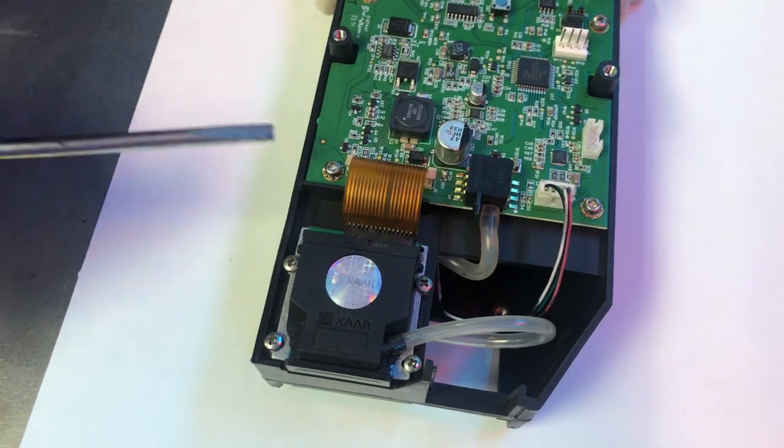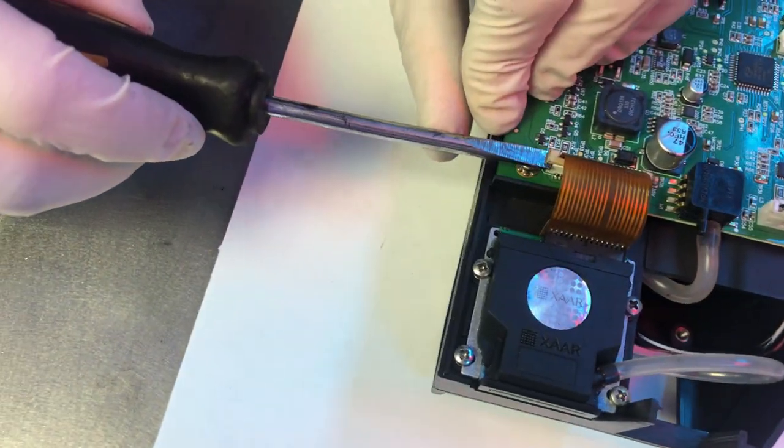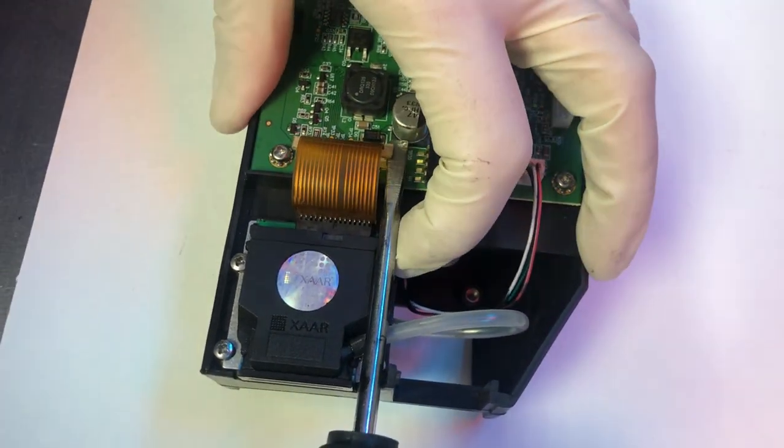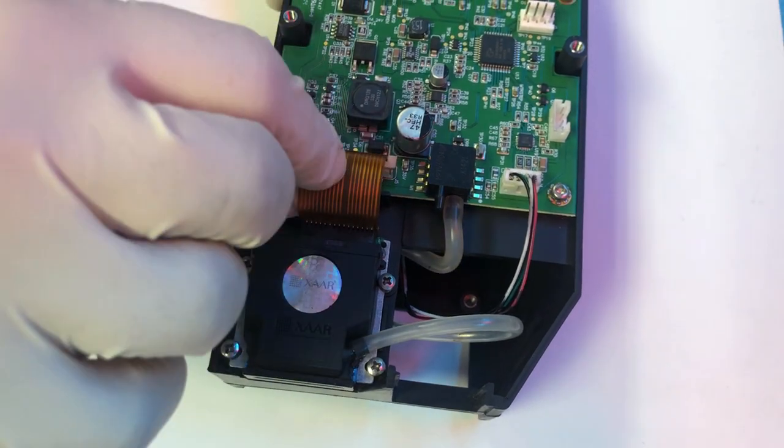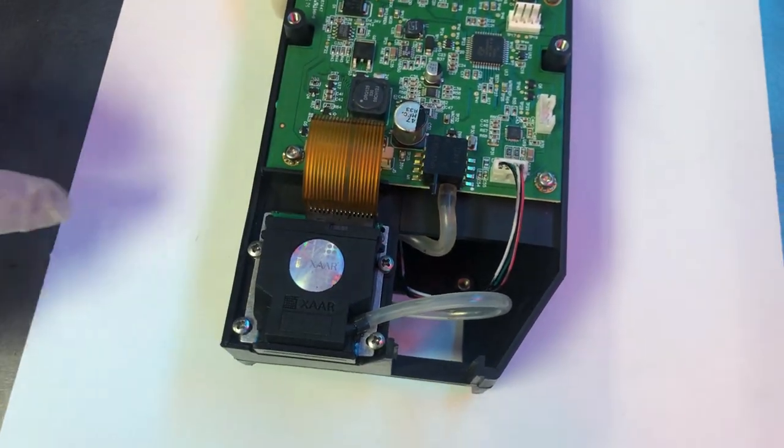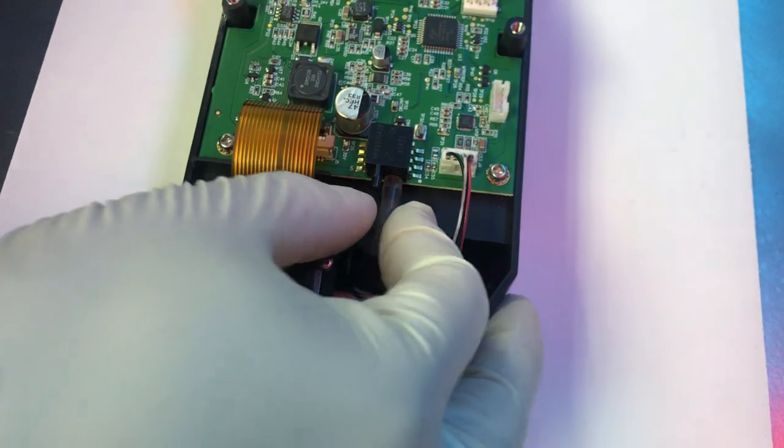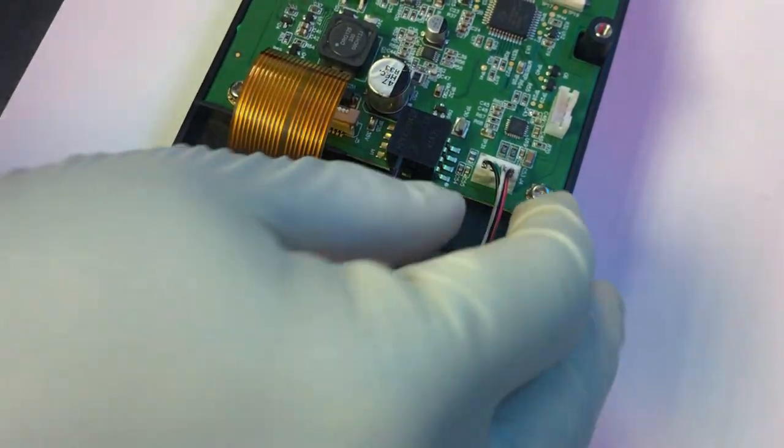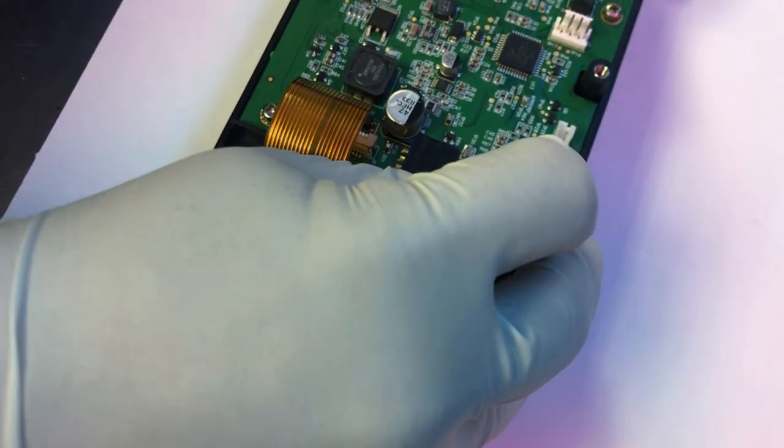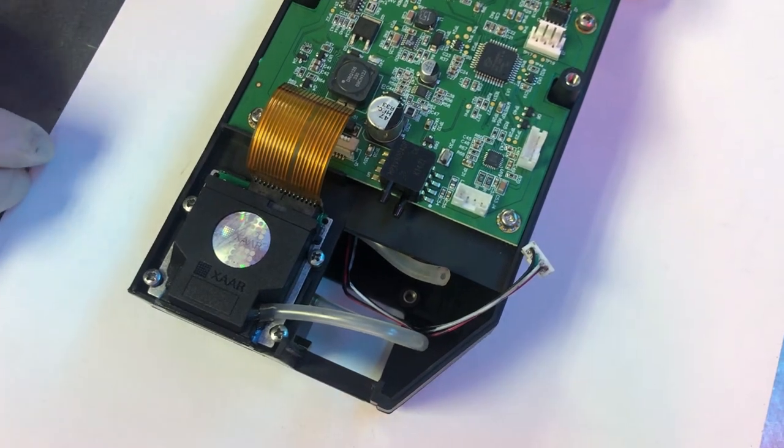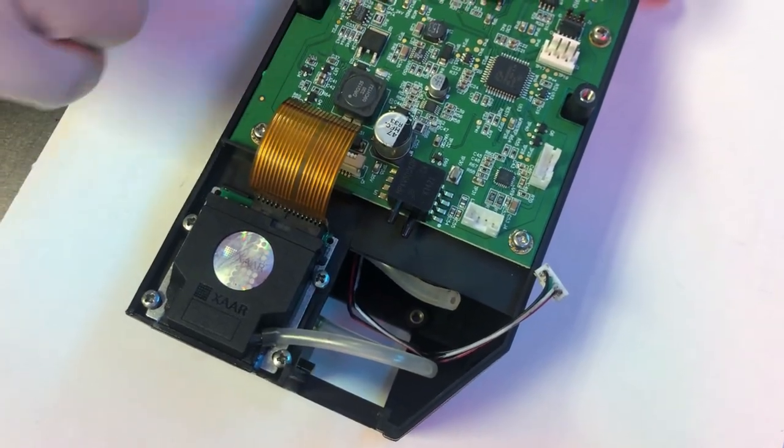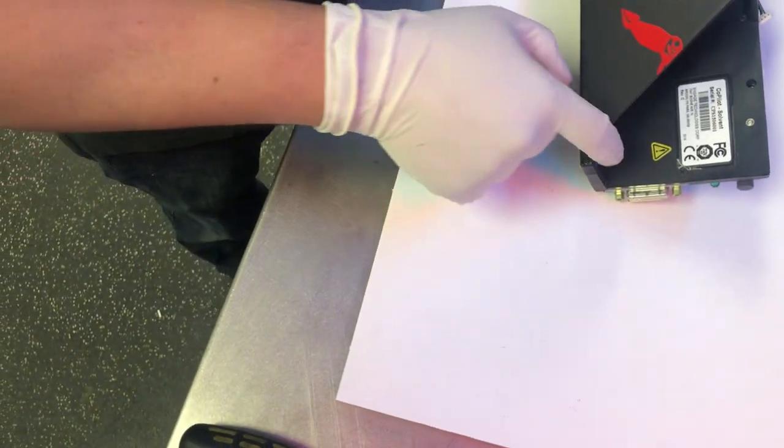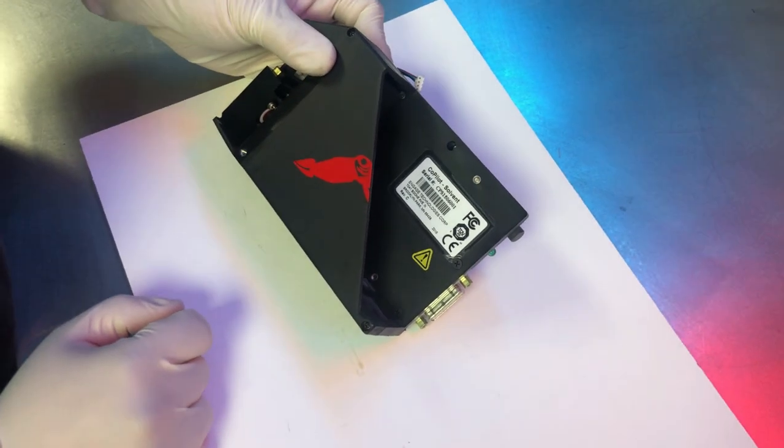First thing we'll do is remove the print engine data cable. We'll pop the tabs on either side and slide the cable up. Then we'll pull out the vacuum tube. Next we'll remove the stepper motor connector. Now that we have those connections removed, we're going to want to unscrew the four screws here and the two on the back side behind the ink cartridge.